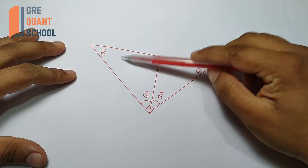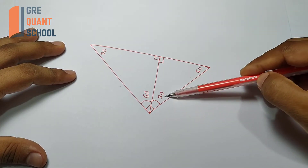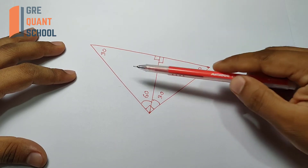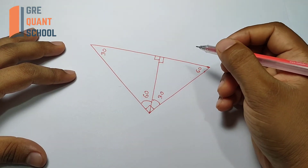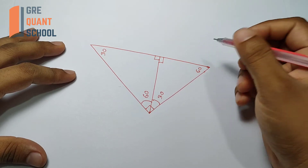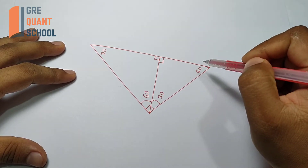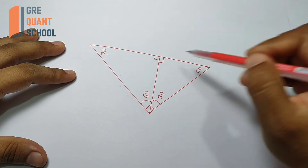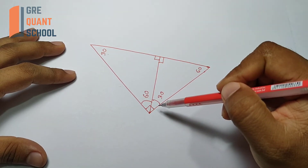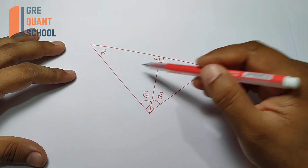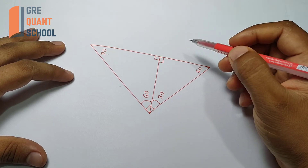The triangle is 30, 60, 90. The triangle is 30, 60, 90. The triangle is 30, 60, 90. The triangle is 90 and similar.